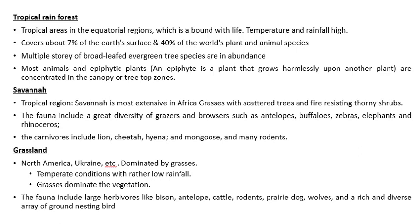Next is the tropical rainforest biome, found in tropical areas in the equatorial regions, which abound with life — temperature and rainfall are high. It covers about seven percent of the earth's surface and contains forty percent of the world's plant and animal species. Multiple-story broad-leaved evergreen tree species are in abundance. Most animals and epiphyte plants are concentrated in the canopy or tree-top zones. An epiphyte is a plant that grows harmlessly upon another plant.